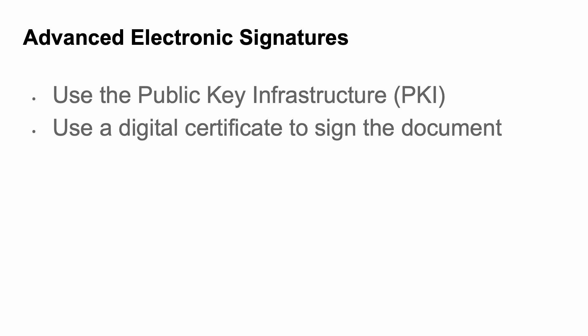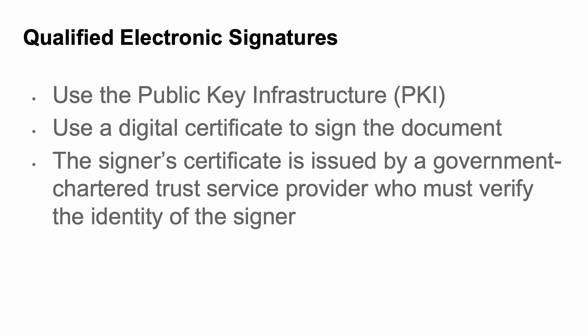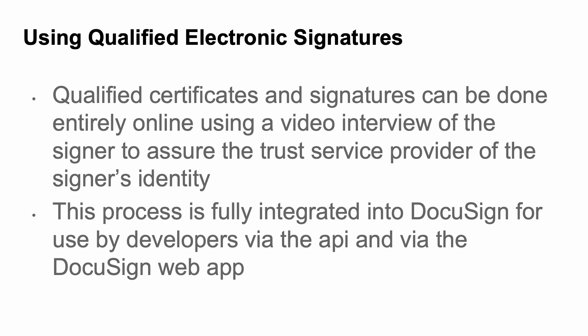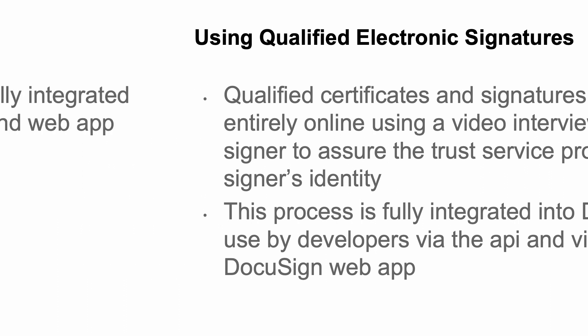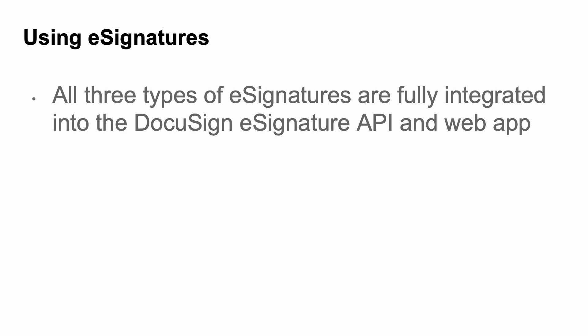Advanced electronic signatures use PKI digital certificates to sign a document. Qualified electronic signatures also use PKI digital certificates, but further require that the signer's certificate is issued by a government-chartered trust service provider who must verify the identity of the signer. Qualified certificates and signatures can be done entirely online using a video interview of the signer. This process is fully integrated into DocuSign for use by developers via the API and via the DocuSign web app.